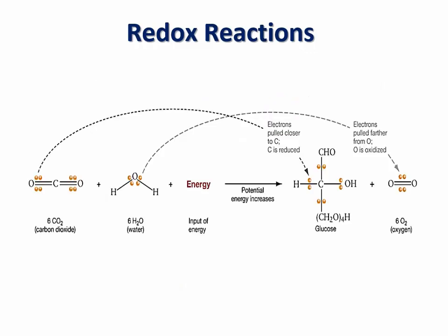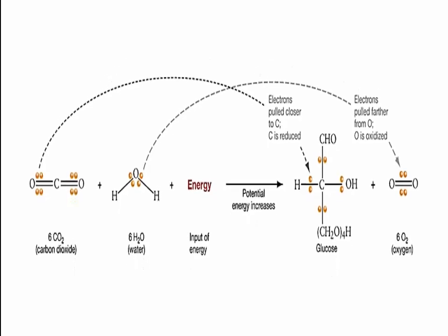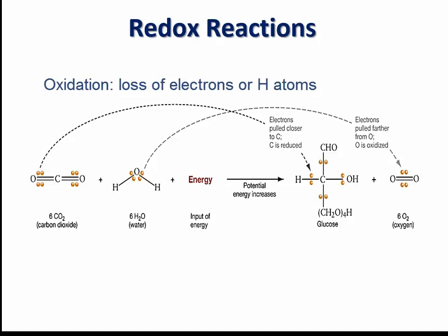Let's take an example of a redox reaction. This is the overall reaction of photosynthesis, where light energy is used to form glucose from carbon dioxide and water molecules. In this reaction, the carbon atoms in carbon dioxide become reduced as they gain electrons by the transfer of hydrogen atoms from water. Conversely, the oxygen atoms in water molecules become oxidized as they lose their hydrogen atoms, since each hydrogen atom has an electron in its electron shell. Therefore, reduction can be defined as a gain of one or more electrons or the gain of one or more hydrogen atoms, and oxidation can be defined as the loss of one or more electrons or hydrogen atoms.